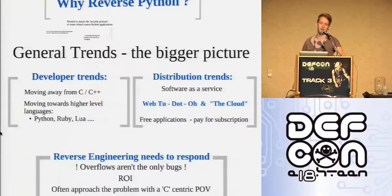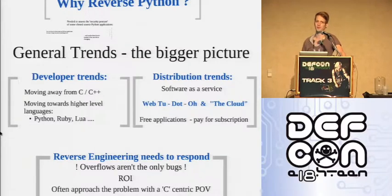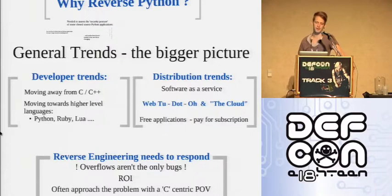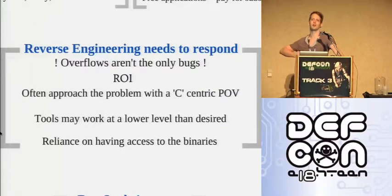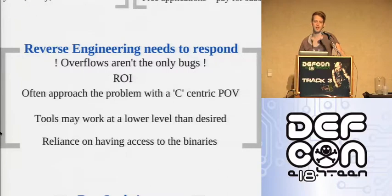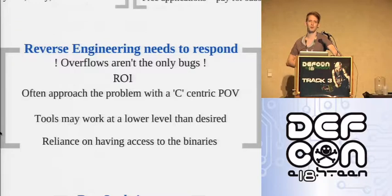What this means for reverse engineering is that maybe you don't actually have access to the files you're trying to reverse, because you're dealing with them on a remote server. Also, overflows aren't the only bugs. Everyone has been obsessed with stack overflows and heap bugs, and all the protections that have been put in place mean that working up a good memory corruption bug now will take some talented people a good six months of solid research.